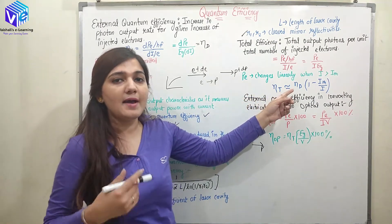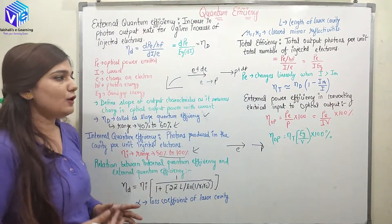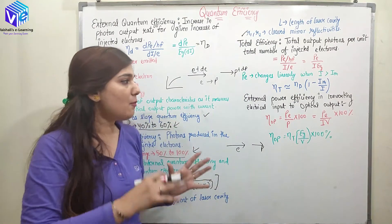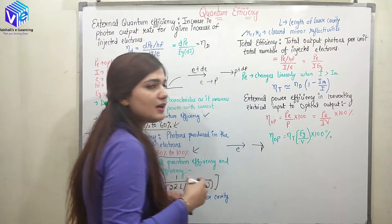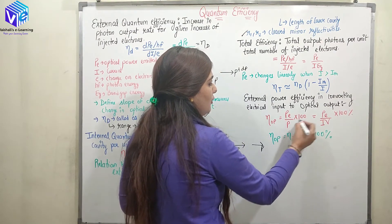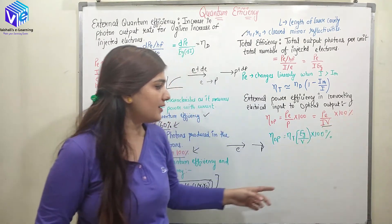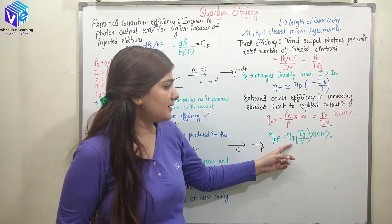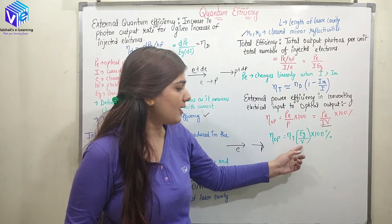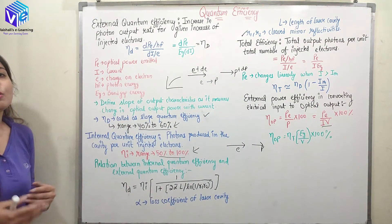Total quantum efficiency, when working above the threshold current, equals eta D into (1 minus I_th upon I). For external power efficiency in converting electrical input to optical output, eta op equals PE upon input signal multiplied by 100. The input electrical signal has power I into V, so eta op equals PE upon IV into 100. This can also be represented as eta t times EG upon V, giving eta op equal to eta t times EG upon V into 100 percent. This is how the various quantum efficiencies can be represented.